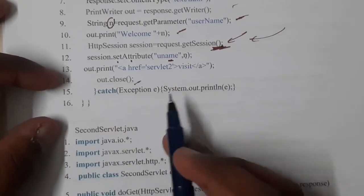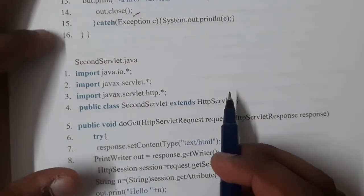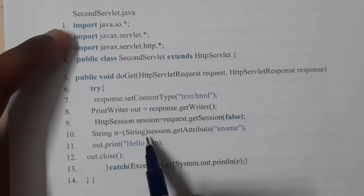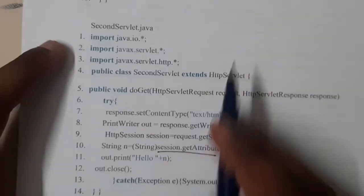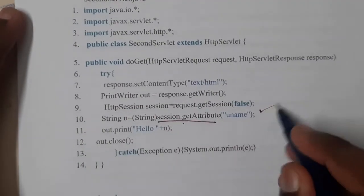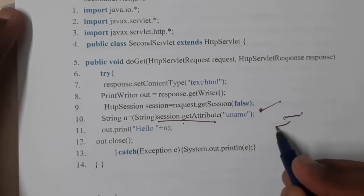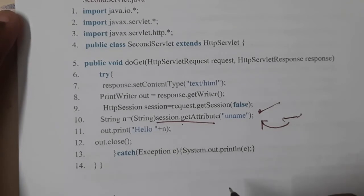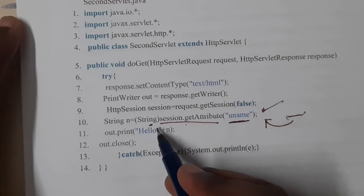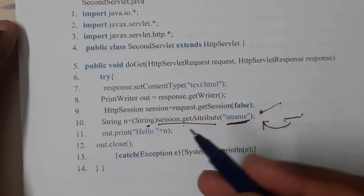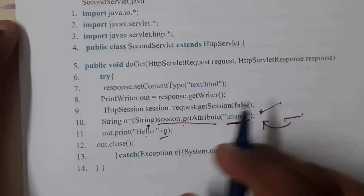In the second servlet, we access the data saved in the session using session.getAttribute(). Always make sure you convert the retrieved data into the required format — for example, if it is a roll number you convert it to integer, and since it is a username it will be a string. So the output will be: 'Hello Ravi'.